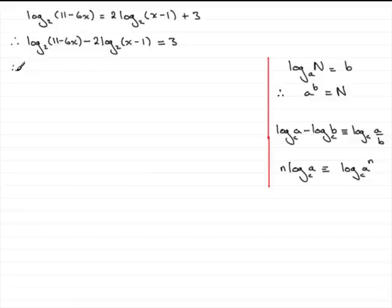So we need to apply this rule first of all. So what we have then is the log in base 2 of 11 minus 6x. Get rid of this 2 by bringing it up as a power. So we've got the log in base 2 of x minus 1 all squared equals 3. Now we've got log of something, take away log of something else, which is what we have here.